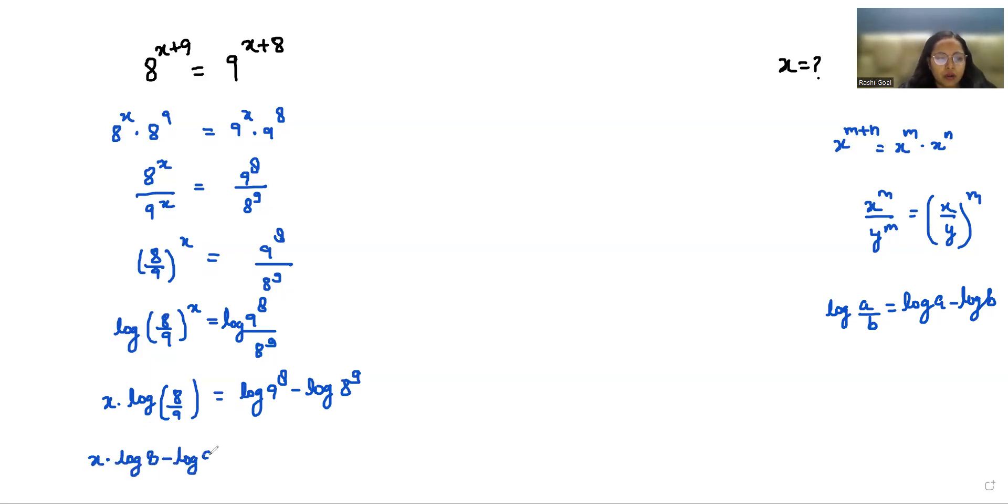Left hand side: log 8 minus log 9 equals this. Now x equals, if I take this to the other side: log 9 power 8 minus log 8 power 9 by log 8 minus log 9.